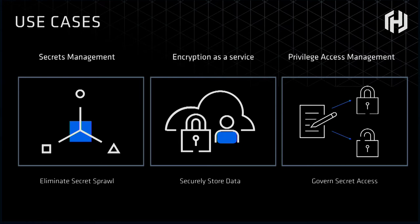Then we have encryption as a service, which is in some sense almost a subset of that problem — really just looking at cryptographic material: encryption keys, public-private keys. How do we manage the lifecycle of key material, as well as do cryptographic offload? So if we don't want developers implementing encryption in their app, how can they offload both the key management and the cryptography to Vault?